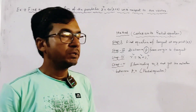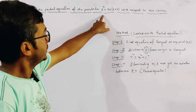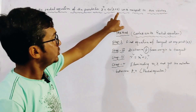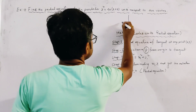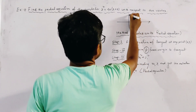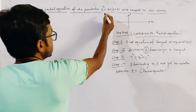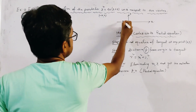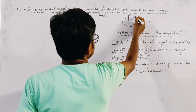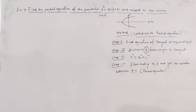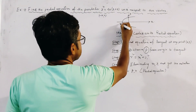The problem of this class is to find the pedal equation of the parabola y² = 4a(x+a) with respect to the vertex. The parabola is drawn with x-axis and y-axis, and the vertex of the parabola is at (-a, 0). The parabola y² = 4a(x+a) — the vertex is at (-a, 0).